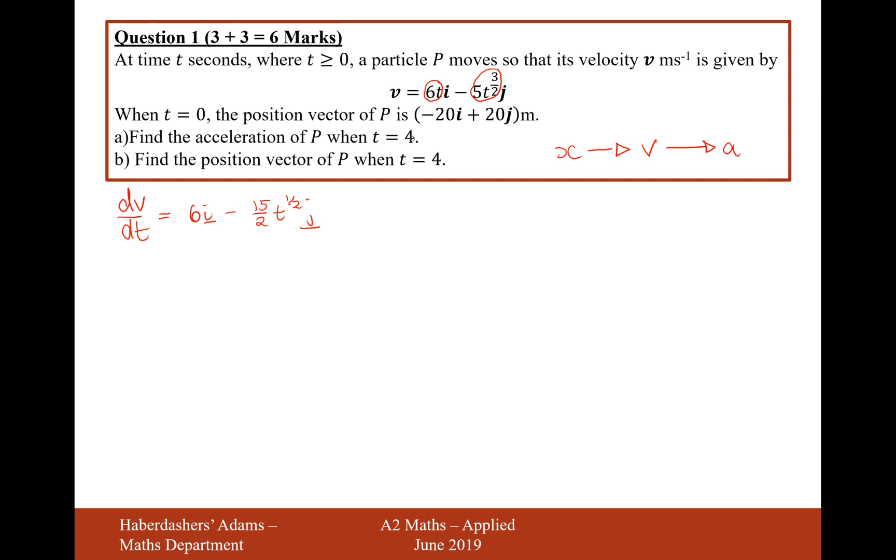And this is precisely when t equals 4, so now I'll substitute in t equals 4. So that's going to be a equals 6i minus 15j. Because we'll have to do the square root of 4 first, that's 2. That'll cancel out the 2 on the bottom, so it's just 15j. So there we are, that's our answer for part a.